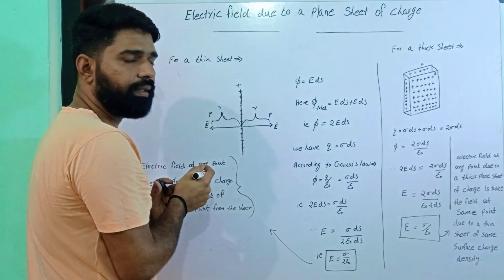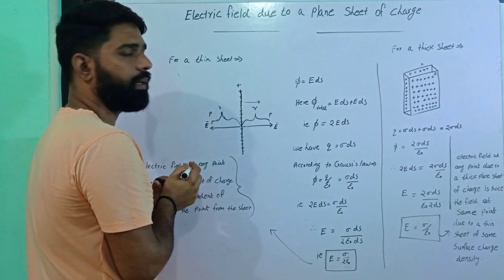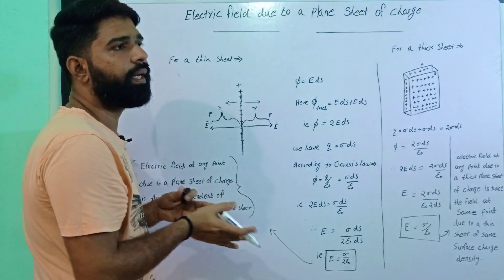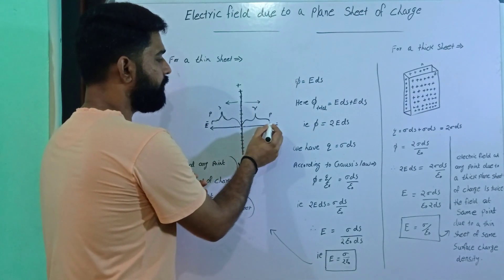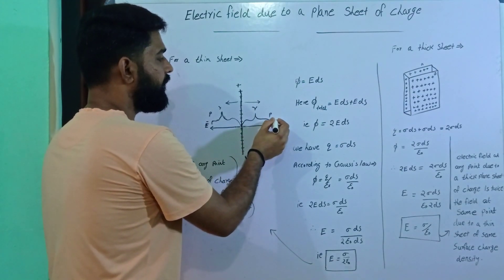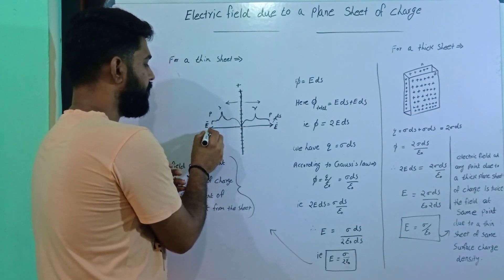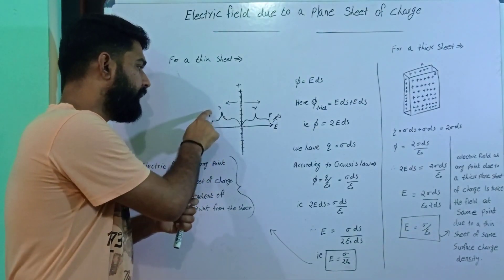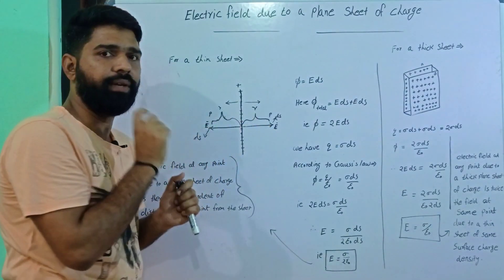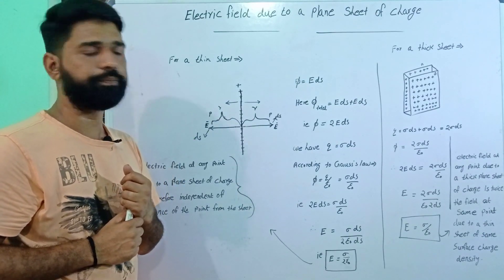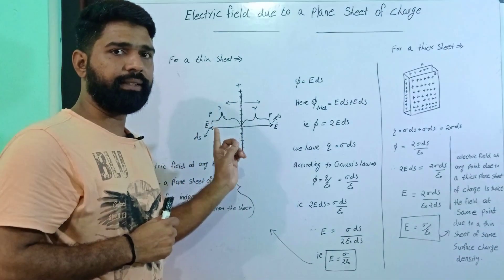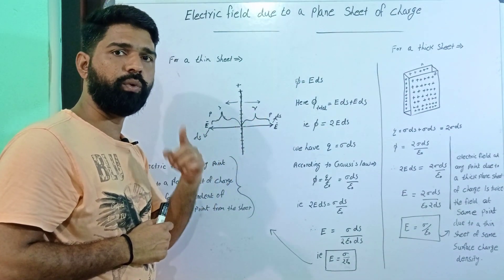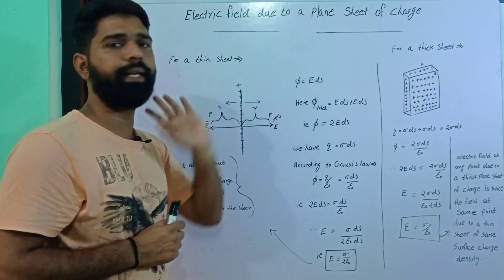The field lines pass through point P. This corresponds to a small area element dS. The electric flux through this area element is given by φ = EdS cosθ. Since θ = 0, cosθ = 1, so φ = EdS.